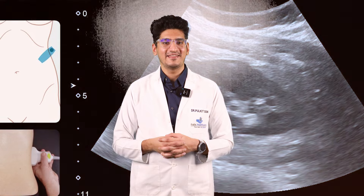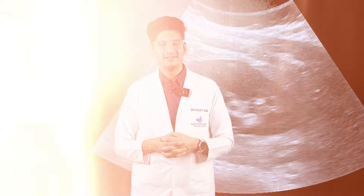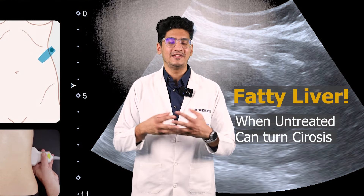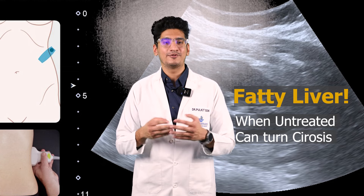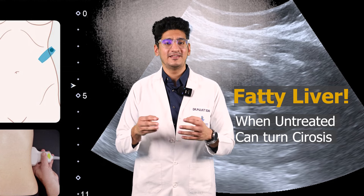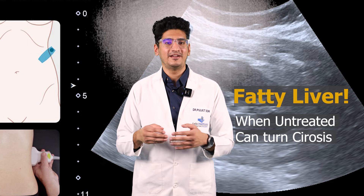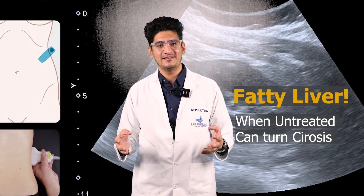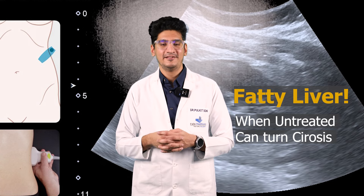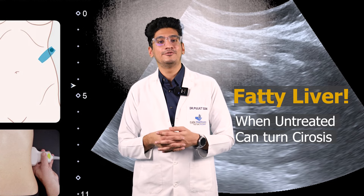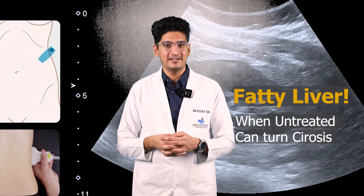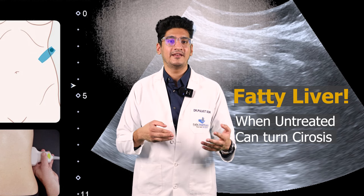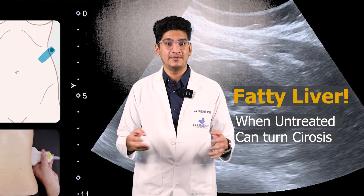First, we will talk about ultrasonography. The first thing we see in the liver is cirrhosis. You should know that there are various stages of fatty liver — there are three grades, and anything above grade 2 or grade 3 can have serious implications.